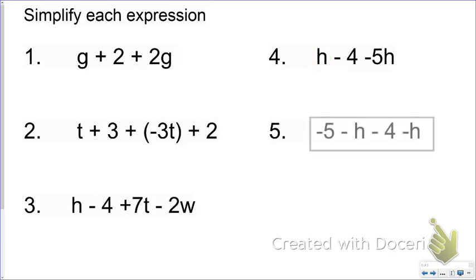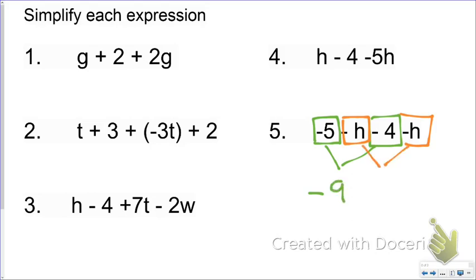Last one. Go ahead and combine these two. I've got a negative 5 here and a negative 4. Those are like terms. I've also got a negative H and another negative H. So a negative 5 combined with a negative 4—there's no canceling out because they're both negatives, so that really just leaves me with negative 9. Then I've got a negative H and a negative H. Again, there's no zero pairs because they're both negative, so that just leaves me with negative 2H.